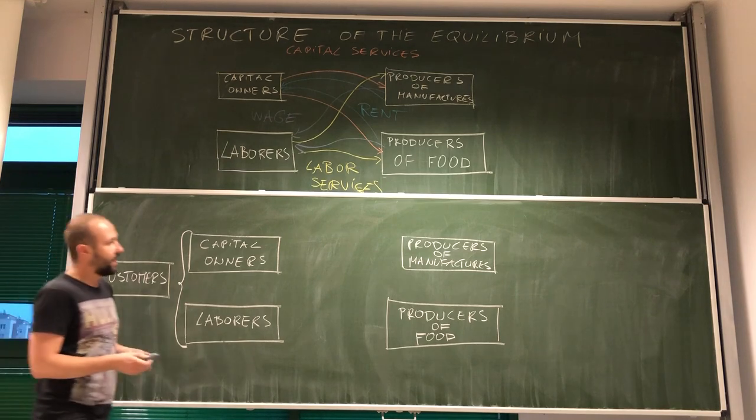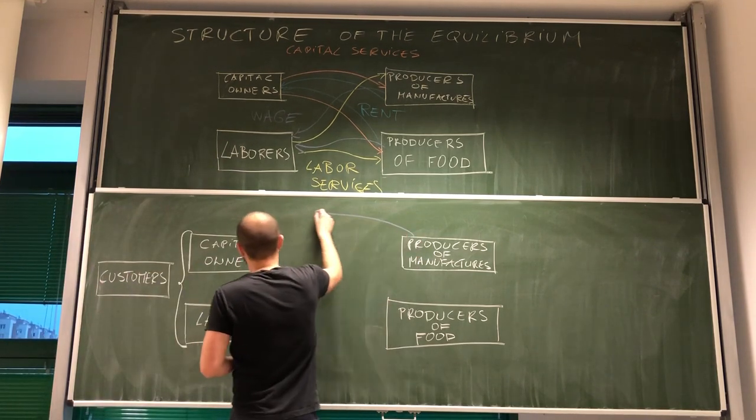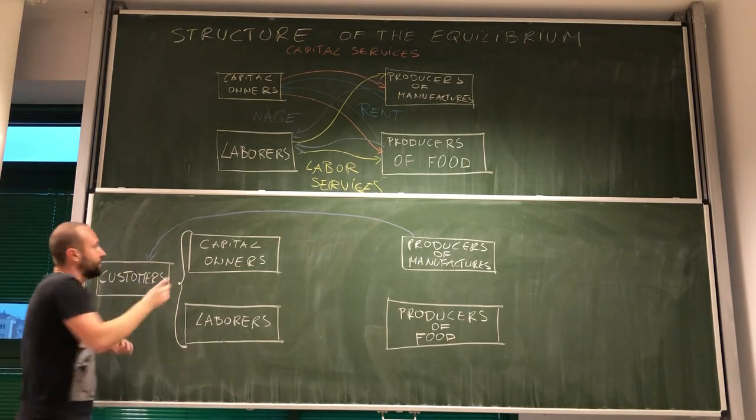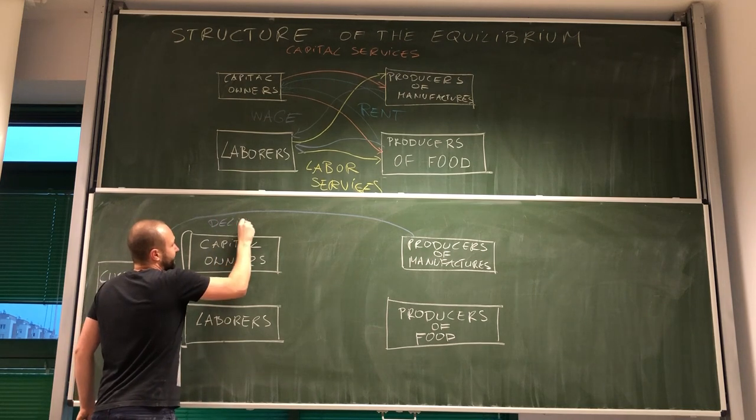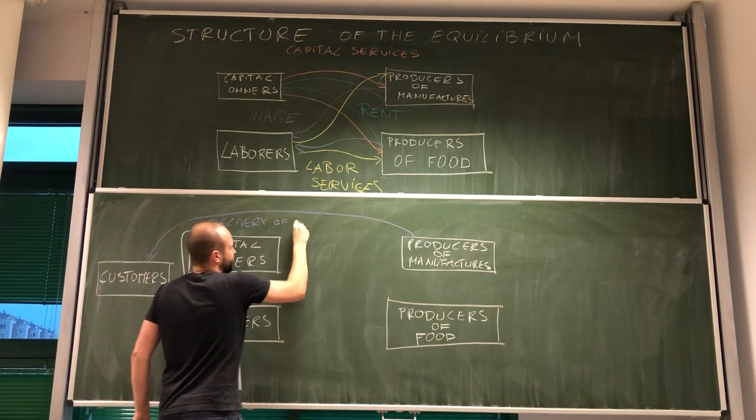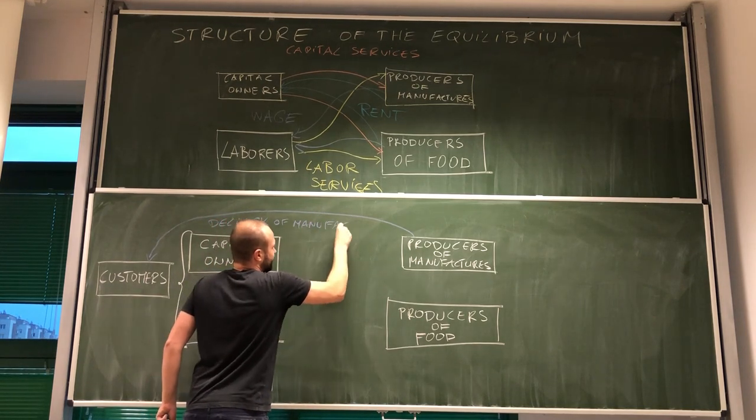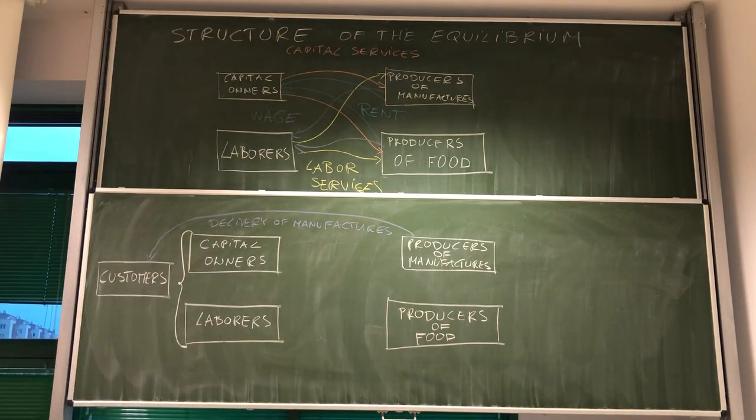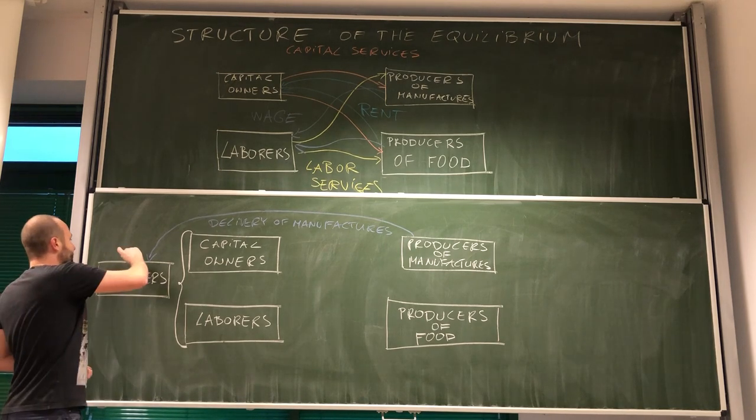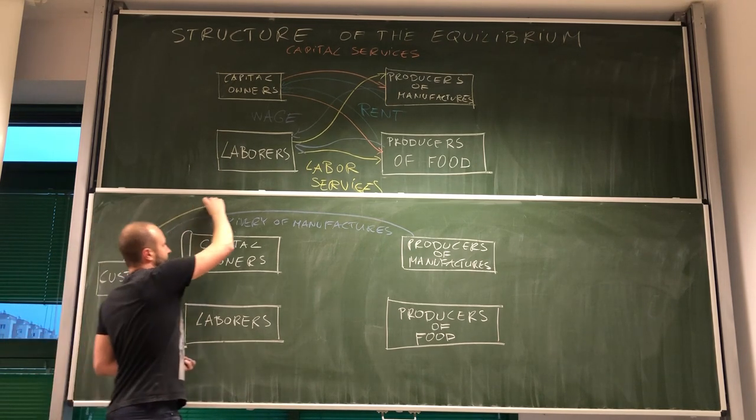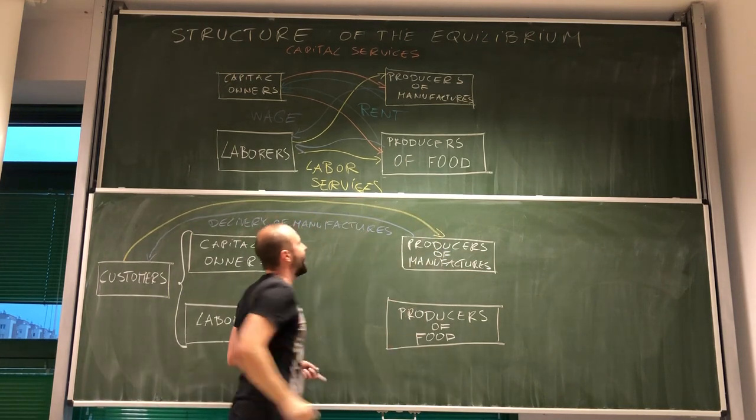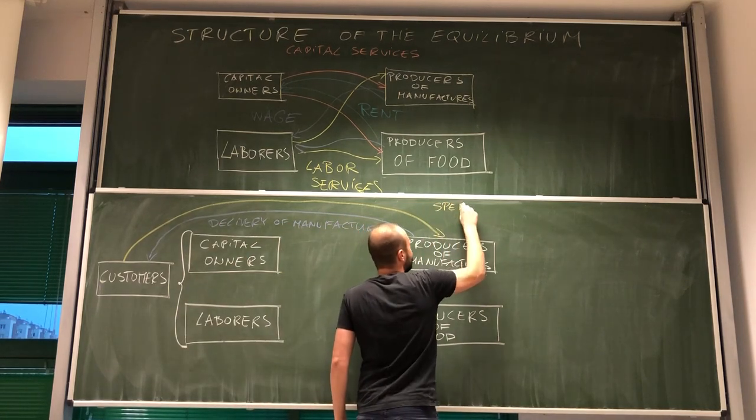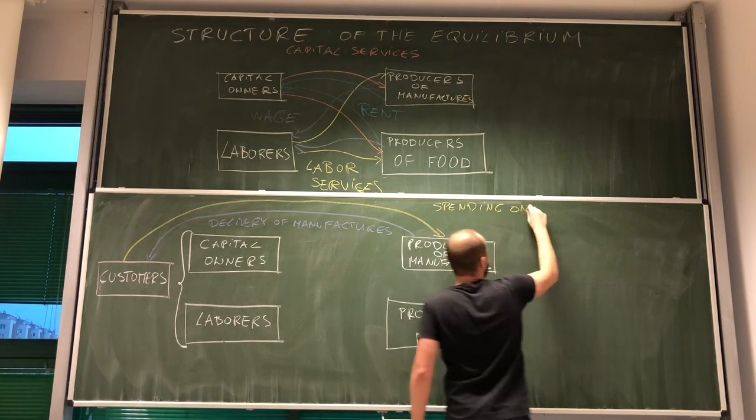So, on one hand, producers of manufacturers deliver manufacturers to the customers. And, of course, they are not doing this for free because then customers need to pay for those manufacturers. So, here we have spending on manufacturers.